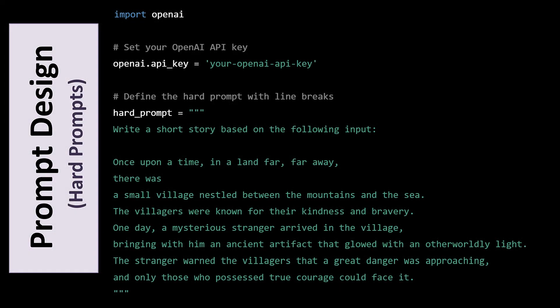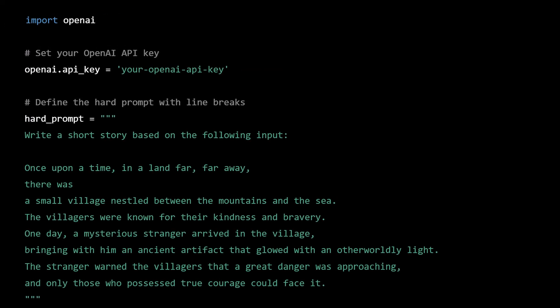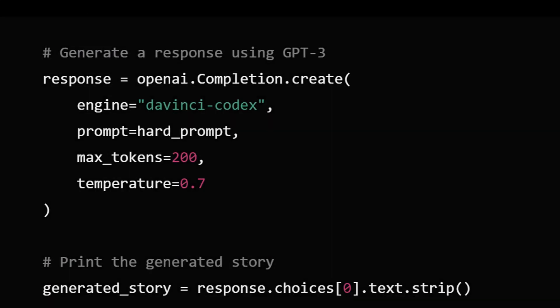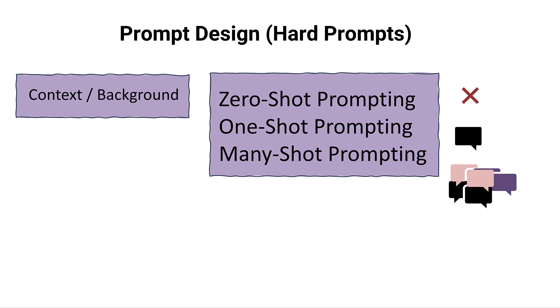When you give a prompt and pass it via an API to a language model, most of the time you're asking for some kind of creation. It is important to give some background and context, and we do that with many-shot prompting.